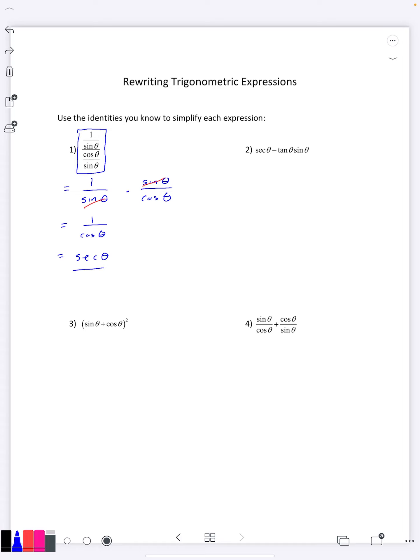When you have something like that, it can be a good idea to convert everything into sine and cosine and then just use those two functions to simplify what you have left.